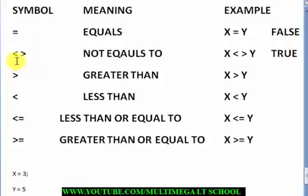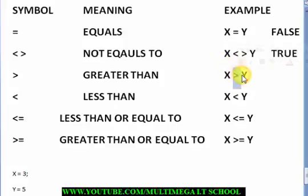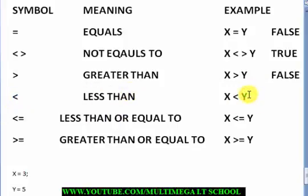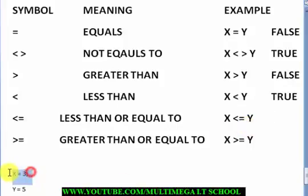That is your greater-than and your less-than. If you look at this expression — 3 is greater than 5 — the answer will be false because 3 is not greater than 5. Then for less-than, the result will be true. The reason is because 3 is less than 5, so the result will be true.